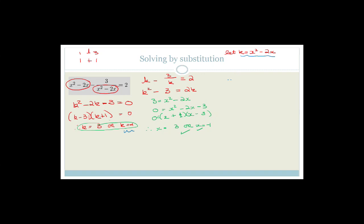Let's factorize x squared minus 2x plus 1. The coefficients of x squared are 1 and 1, the signs are both minus, and the only factors of 1 are 1 and 1. So we get x minus 1 equals 0 or x minus 1 equals 0, therefore x equals 1. We actually have 4 solutions, which we should have - because when we multiplied it out, we ended up with x to the 4. Two are equal solutions but they are still separate solutions, so we've got 4 solutions.